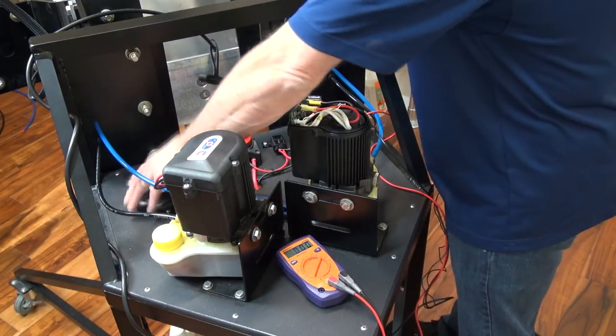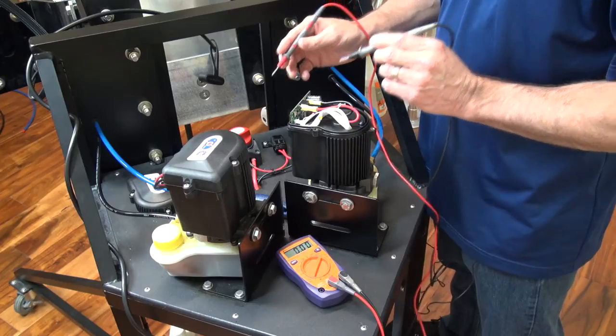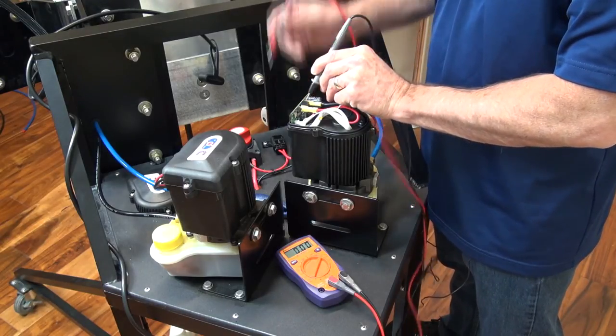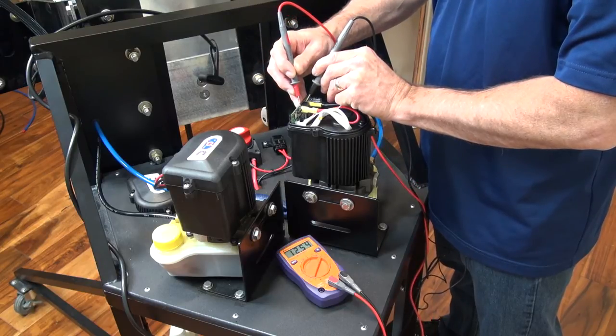Go ahead and unplug the ribbon wire. Then take the black lead from your multimeter and touch it on the negative post of the circuit board, and touch the red lead on the positive post of the circuit board.